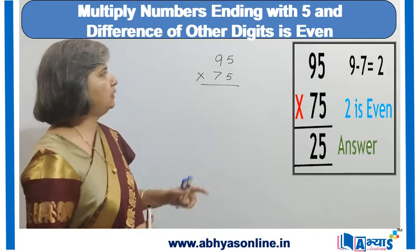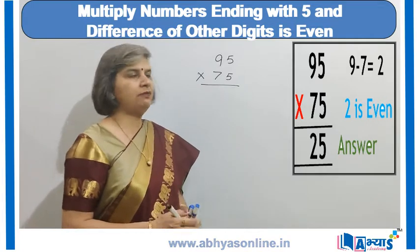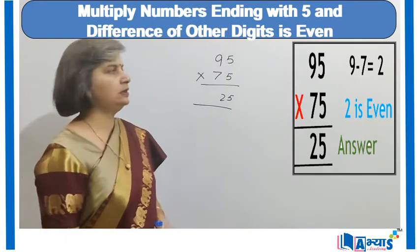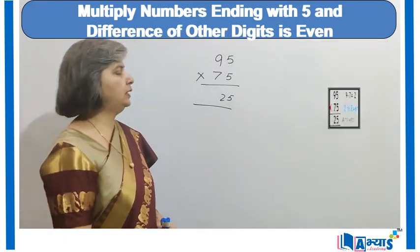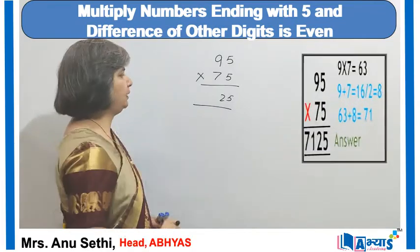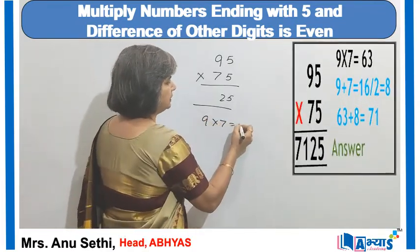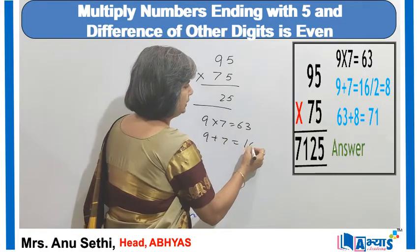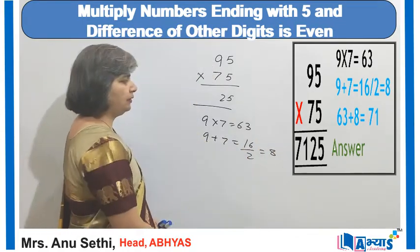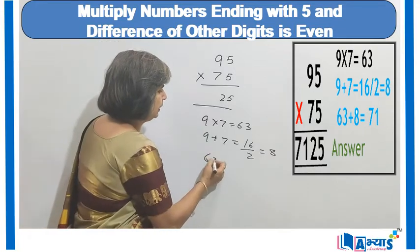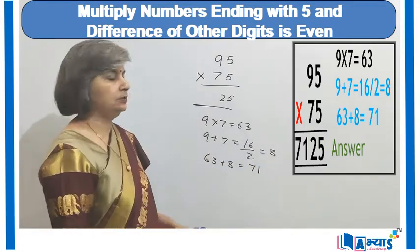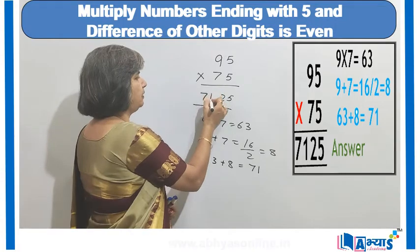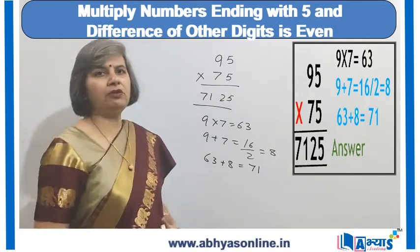When the difference of the other digits is even, the first step is to prefix 25 in the answer. Next, multiply 9 with 7: 9 × 7 = 63. Then add 9 and 7 to get 16, divide by 2 to get 8, and add 8 to 63: 63 + 8 = 71. This 71 is prefixed in the answer, giving us 7125.